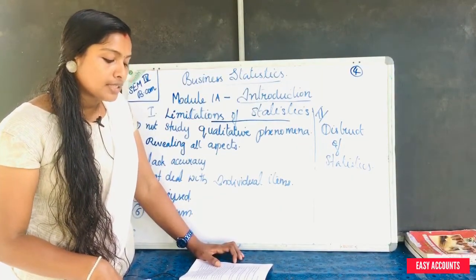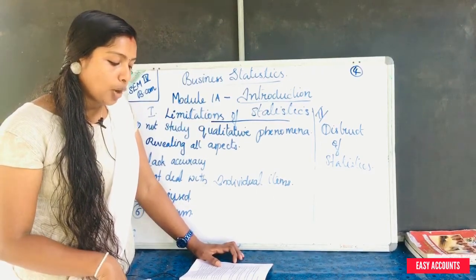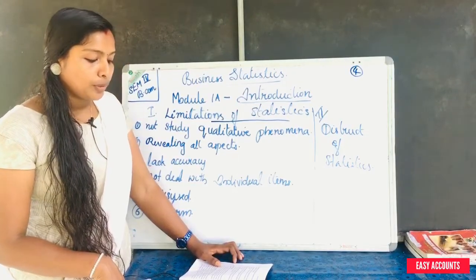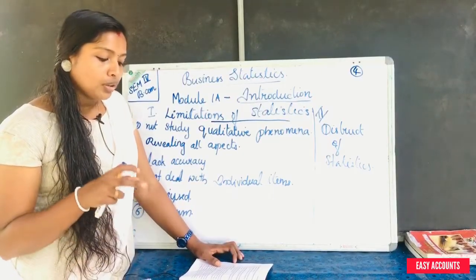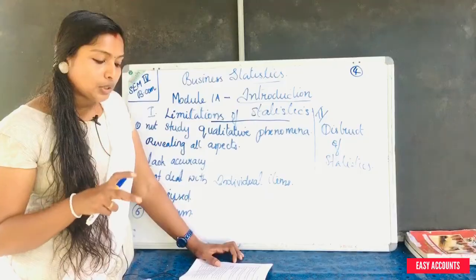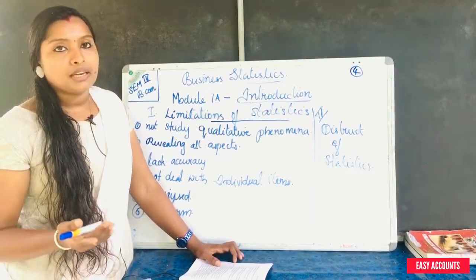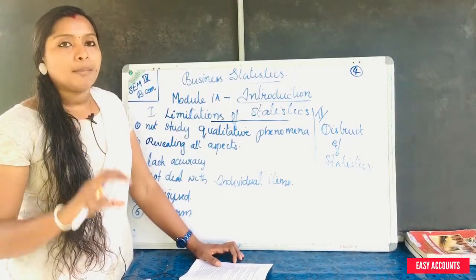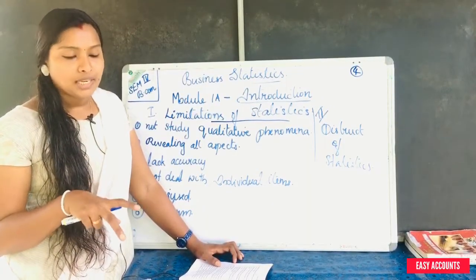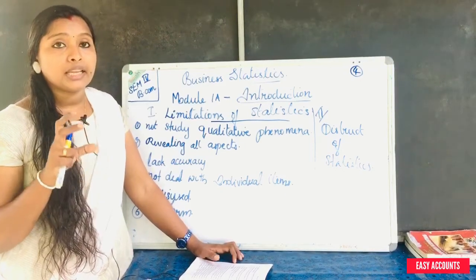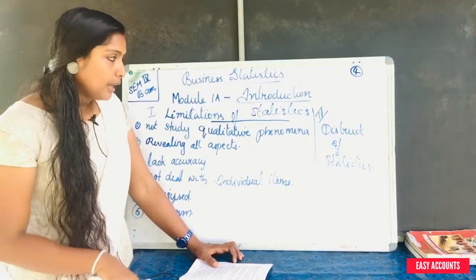Data used for statistical analysis must be uniform. For example, the data related to the income of a group of people cannot be mixed with the data related to the expenditure of another group of people. We must not mix data across different groups. That is why we use uniform data in statistics. So, these are the limitations of statistics.